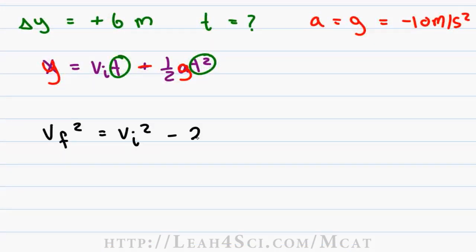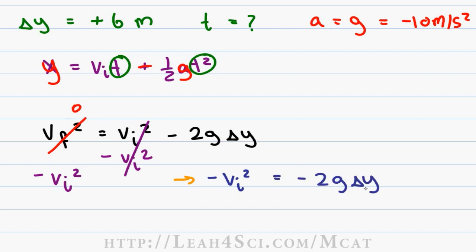Starting with the equation v final squared equals v initial squared minus 2g delta y. We know that v final, or the velocity at the top, is going to be zero because when you throw the rock up it will slow down, slow down, and come to a stop. We drop that out of the equation. We want to solve for v initial so we'll move that over to the other side, and this gives us a new equation as follows. Negative v initial squared is equal to negative 2g delta y. We have negative on both sides so we can cancel it out, and that means v initial squared equals 2g delta y, and then all we have to do is plug in and solve.